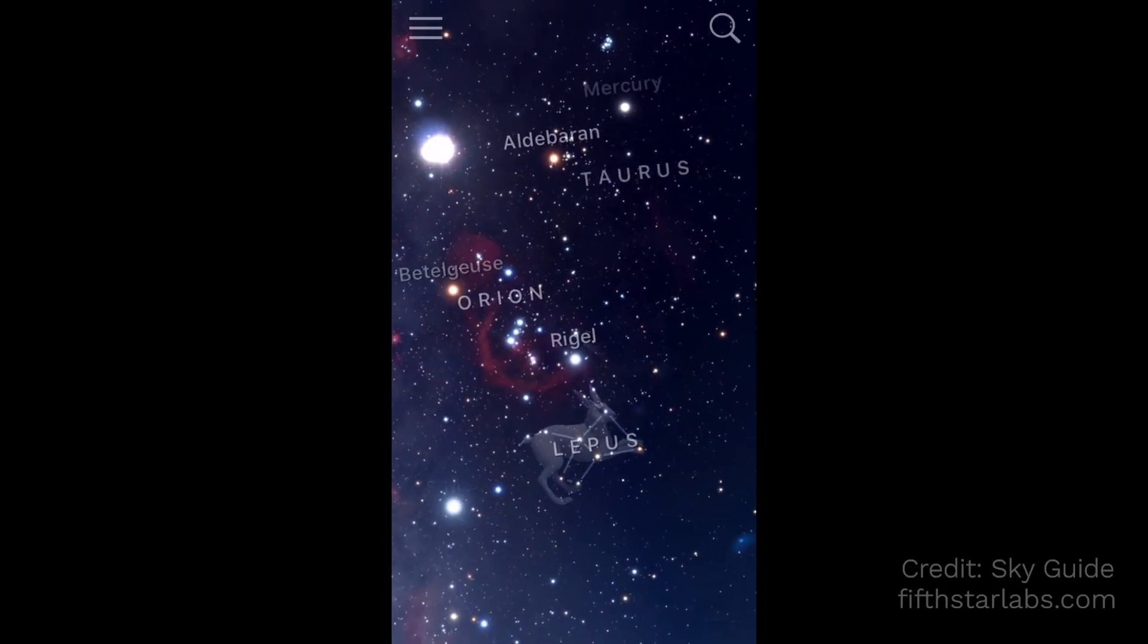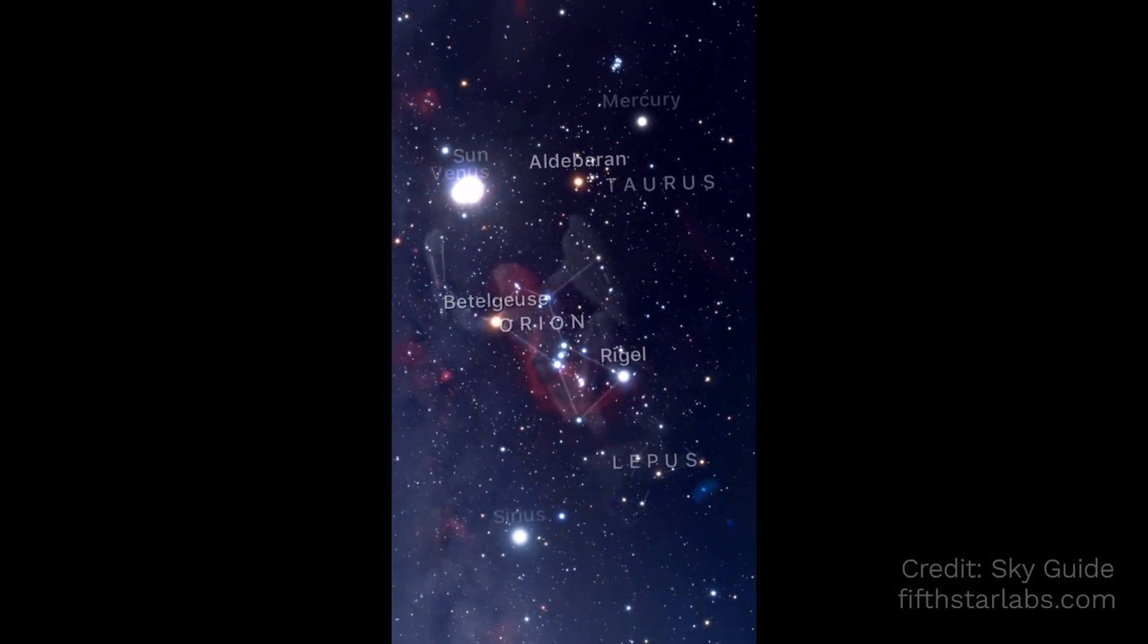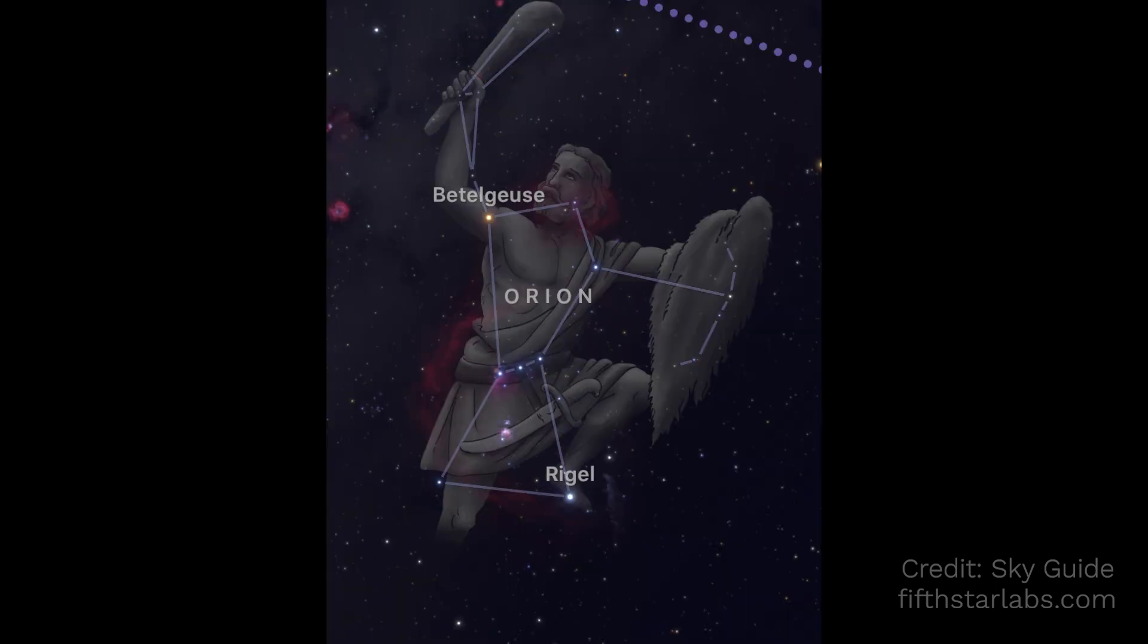They make different apps that can help you see these. Some of these constellations, like the stars of Orion, to me, whoa, they really do look like the outline of a person.